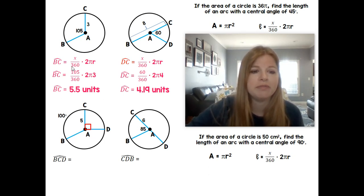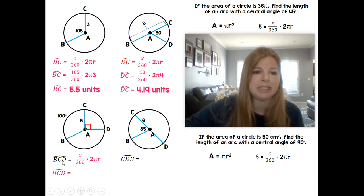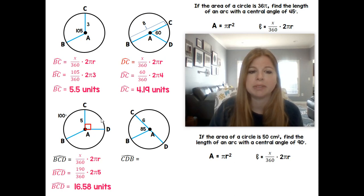If I wanted to find the arc of BCD, what I have to see here is that when I go to apply my formula for arc BCD, arc BCD is a major arc. It covers 100 degrees plus 90. So I'm dealing with 190 over 360. My radius is 5. And you should be able to get 16.58 units.